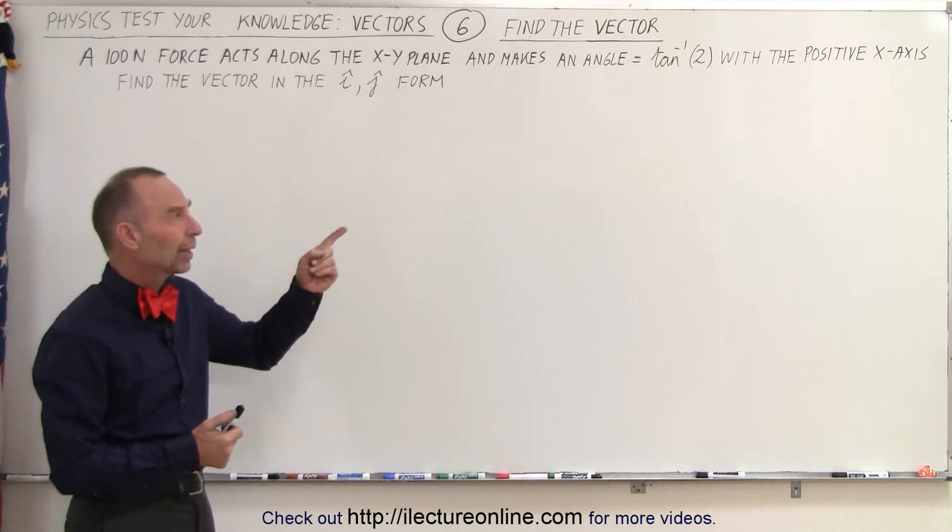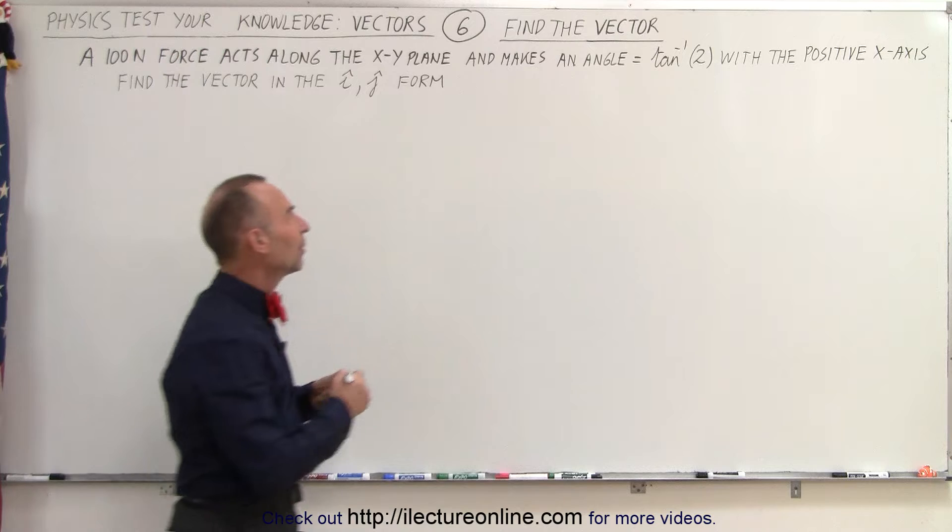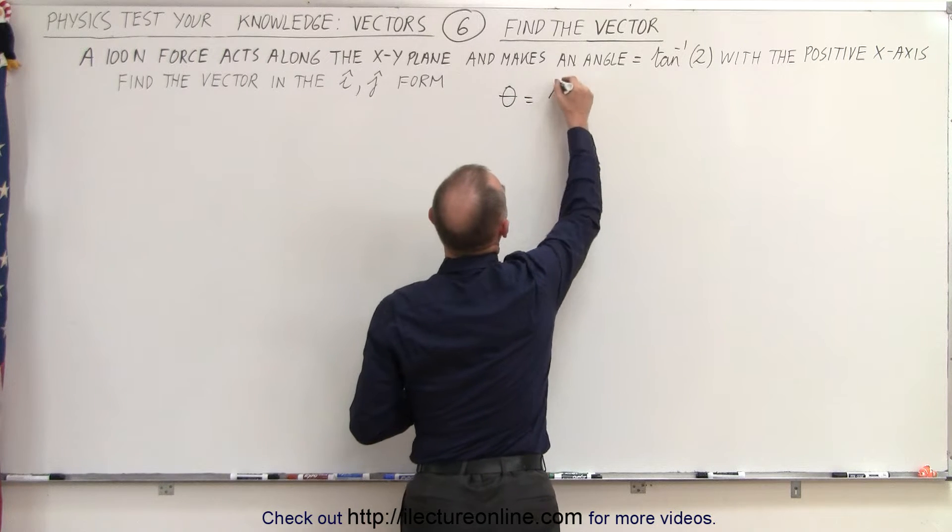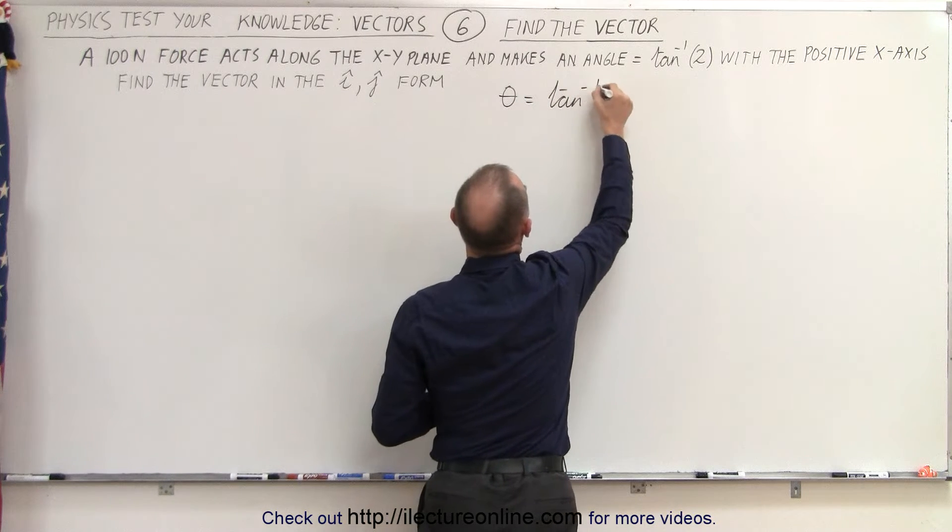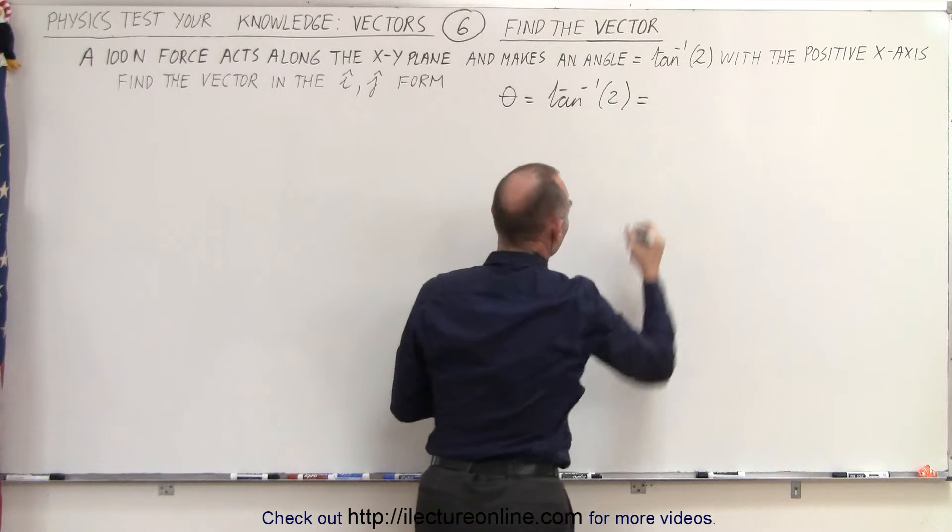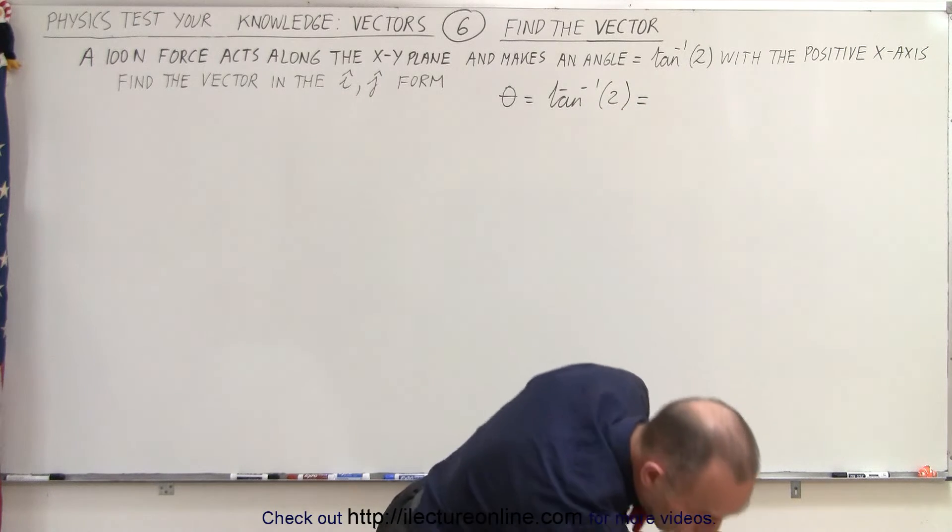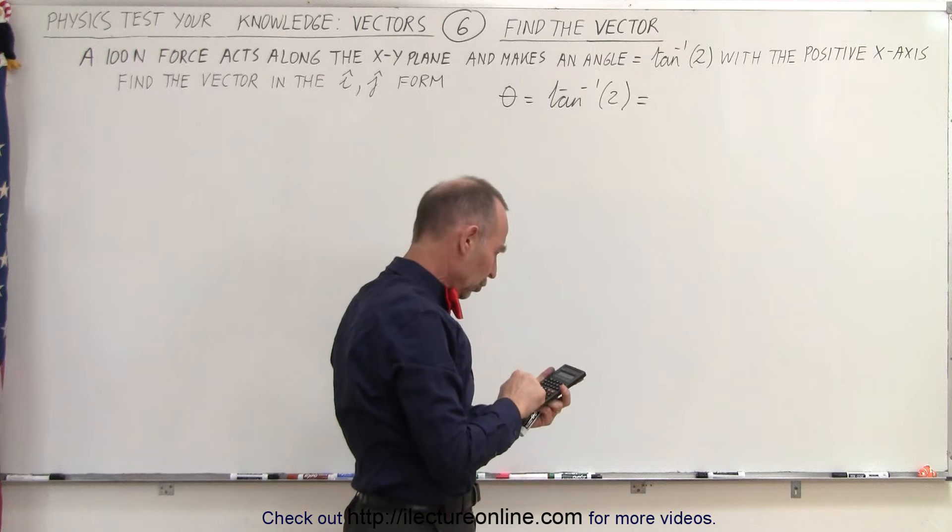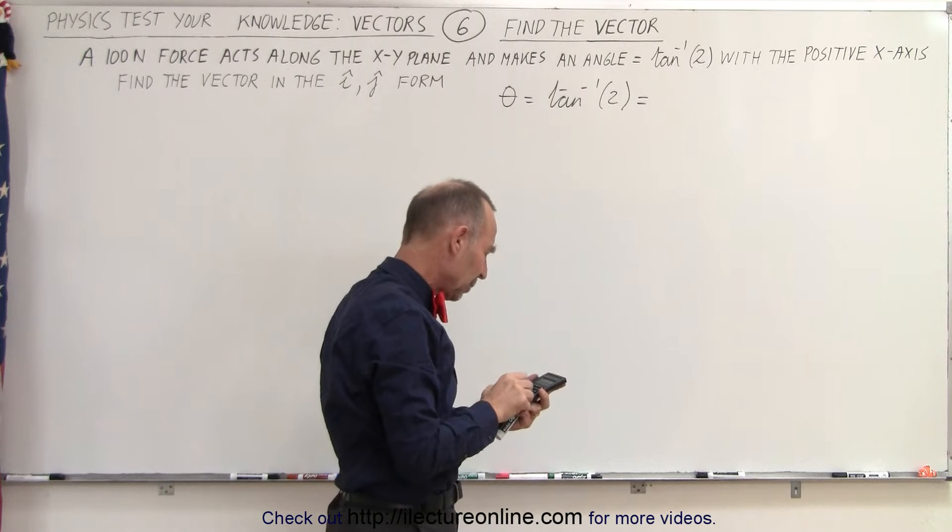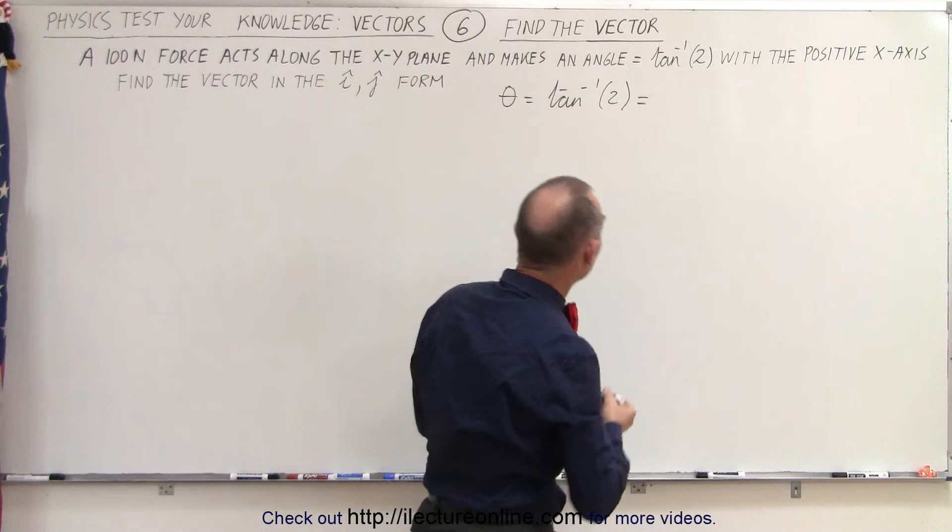Well, first let's find out what angle that is equal to. Let's say we have an angle theta and it's equal to the inverse tangent of 2. Let's get a calculator and figure out what that angle is equal to. We put in 2 and we take the inverse tangent. It gives us 63.435 degrees.